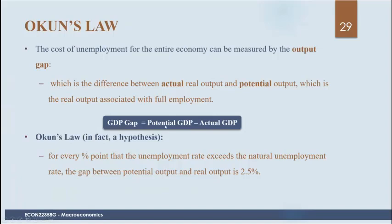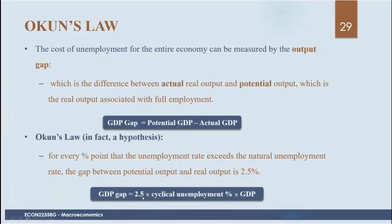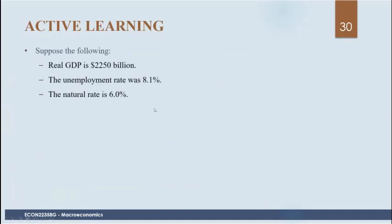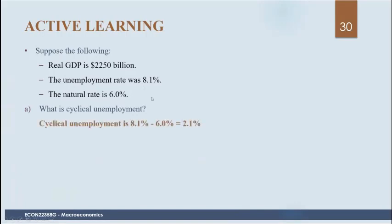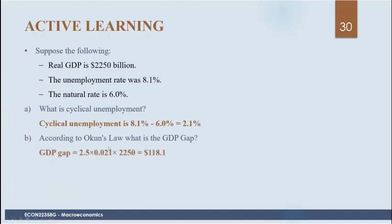The actual GDP would be that percentage below potential. We take 2.5, multiply it by the cyclical unemployment rate, and then multiply by actual GDP. Suppose real GDP is $2.25 trillion, the unemployment rate is 8%, and the natural rate is 6%. Cyclical unemployment is 2%. According to Okun's Law, we take 2.5 times 0.02 times $2.25 trillion to get a GDP gap of approximately $118 billion. That concludes the lecture for today.